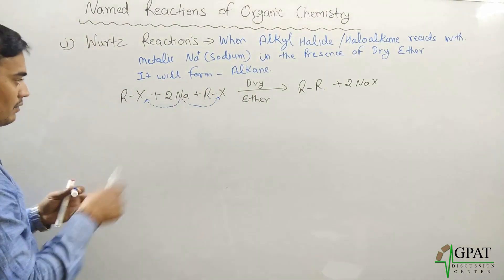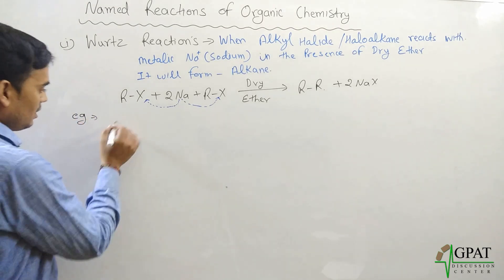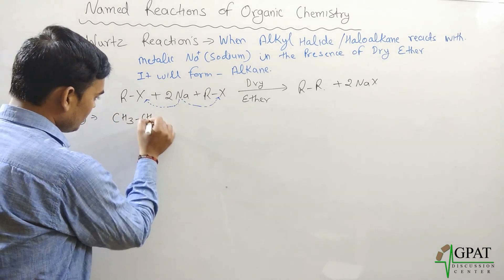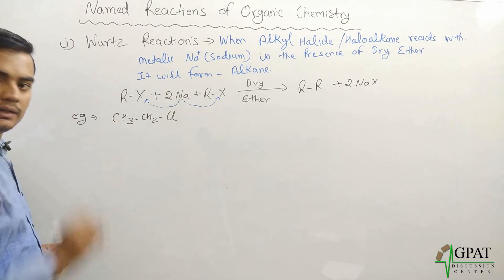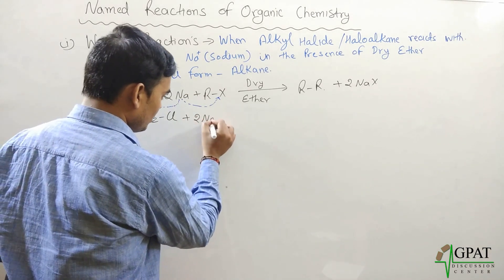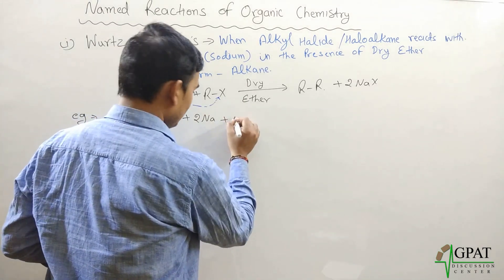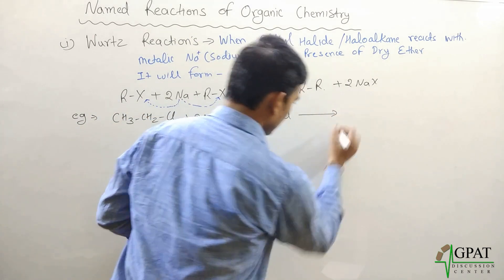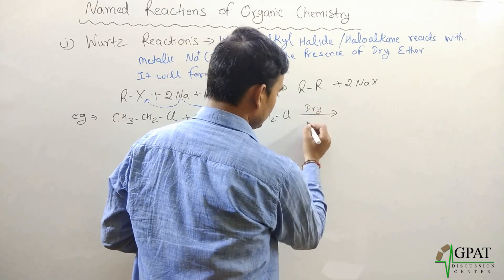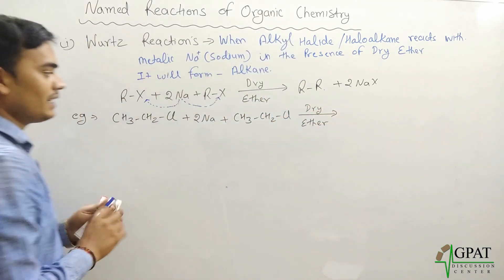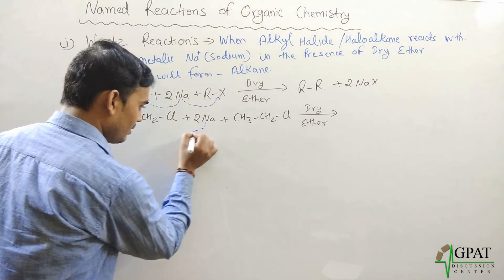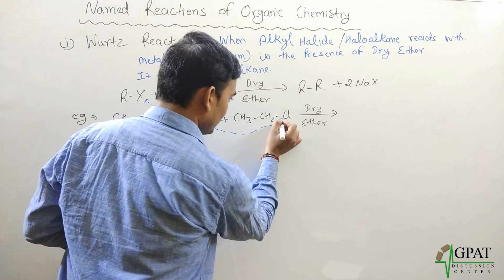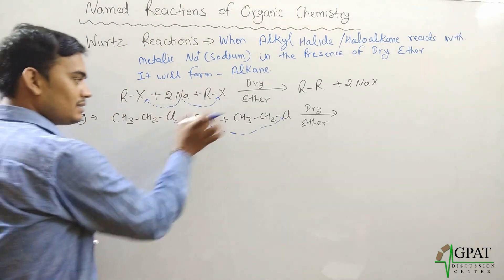For example, take ethyl chloride. When ethyl chloride reacts with sodium and another ethyl chloride compound in the presence of dry ether, one sodium ion reacts with one chloride ion and another sodium ion reacts with the other chloride ion.